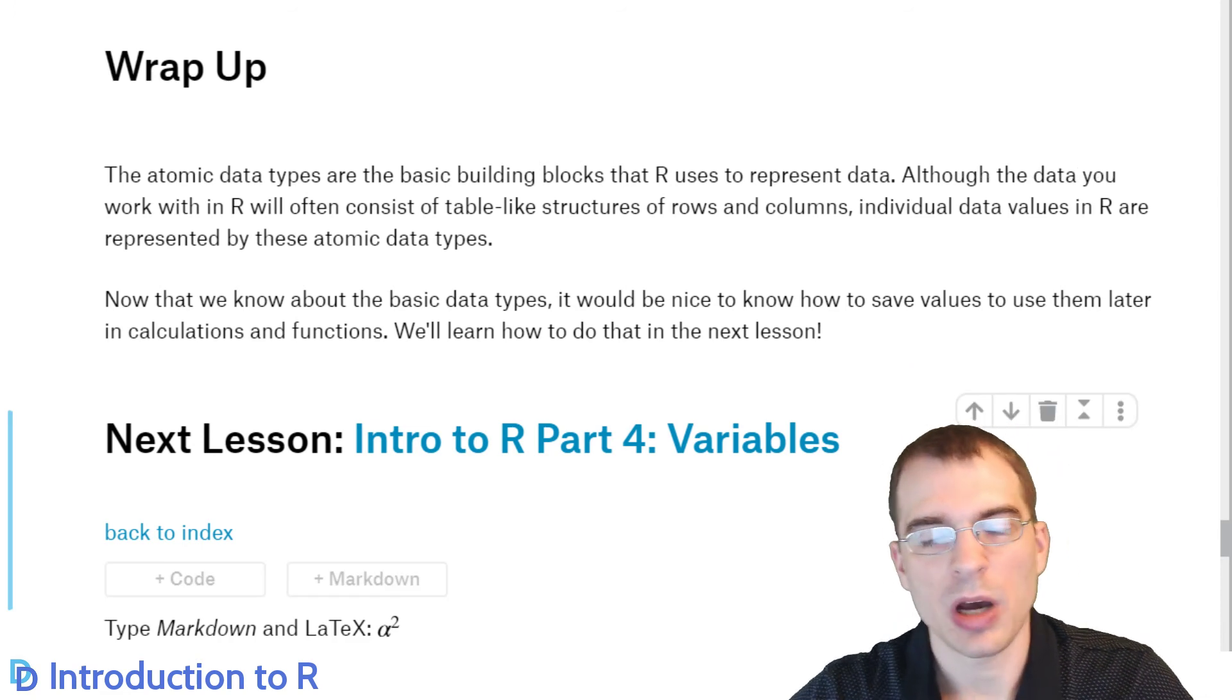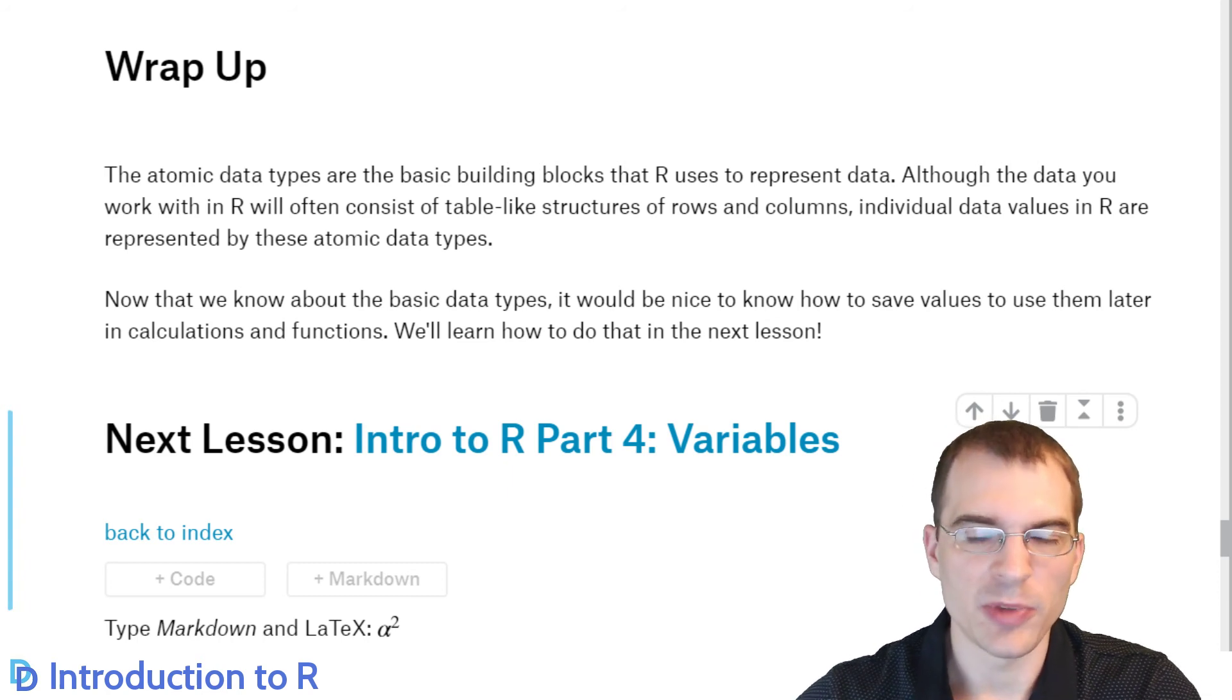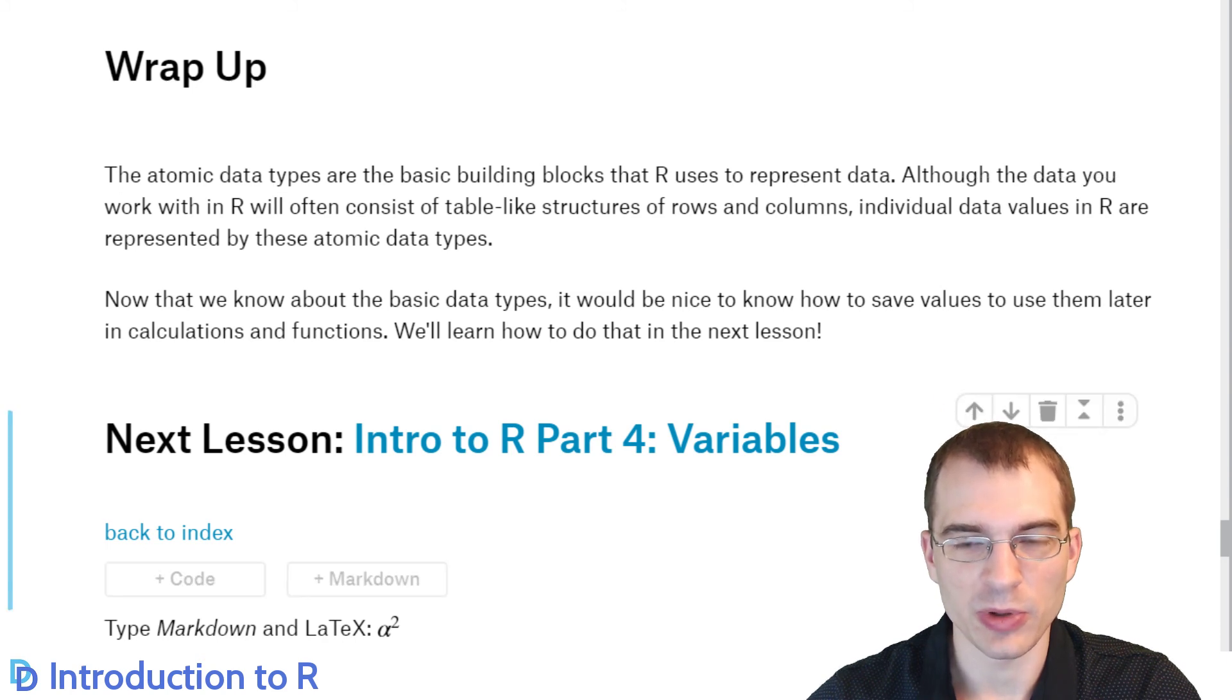So that covers the five atomic data types that we're going to look into in this lesson. There is another rare data type that I think is called binary or something. Long story short, you don't really need to know what it is or to work with it, at least for what we're going to do in our guide. But we would like to know how to take values that we're using and store them and use them later. So in the next lesson, we're going to get into how to do that by learning about variables and how to assign them. So look forward to that.